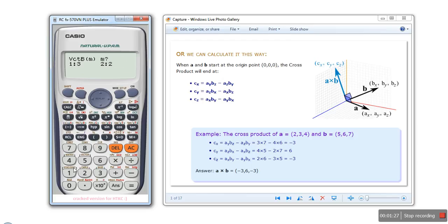Of three dimensions, and we will enter five, six, seven, AC. So we now have vector A and vector B.